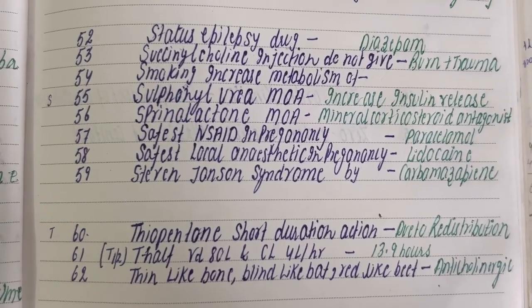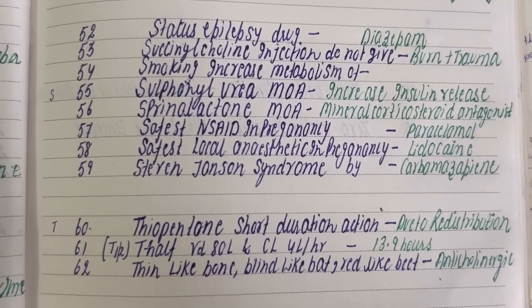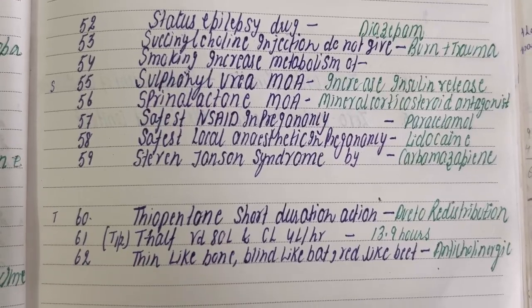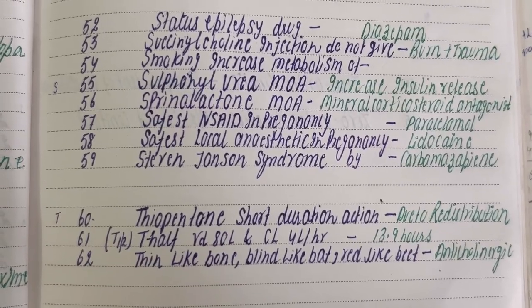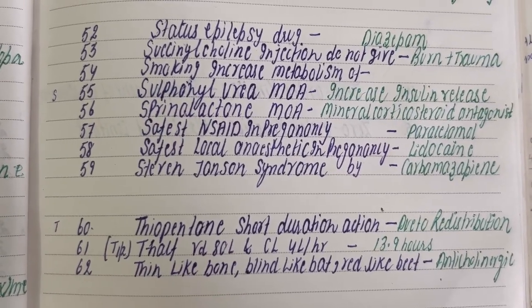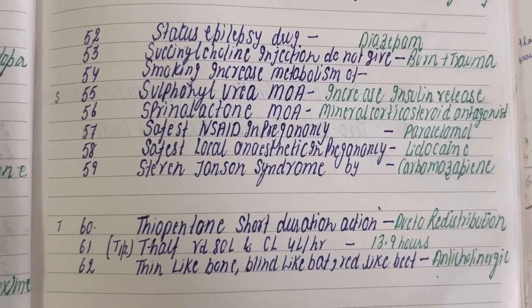The next question is on half-life. Volume of distribution is 80 litres, clearance is 4 litres per hour — calculate the half-life.